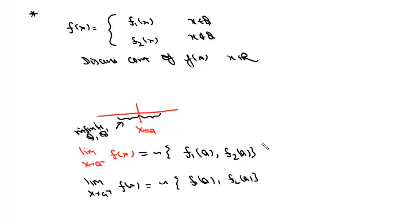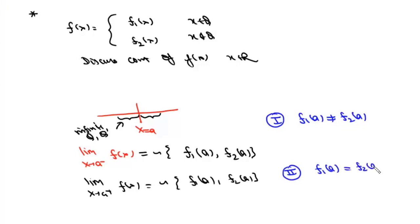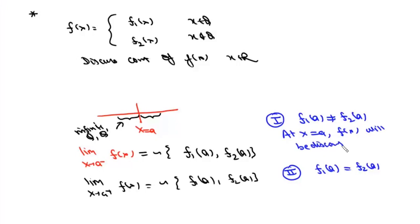Now we have two cases. Case 1: f1(a) ≠ f2(a), and Case 2: f1(a) = f2(a). If f1(a) and f2(a) are not equal, then at all these points we get two different oscillating limit values. So in that case this limit will be oscillating, and at all such points this function f(x) will be discontinuous. So at all real numbers x = a, the function will be discontinuous if f1(a) ≠ f2(a).